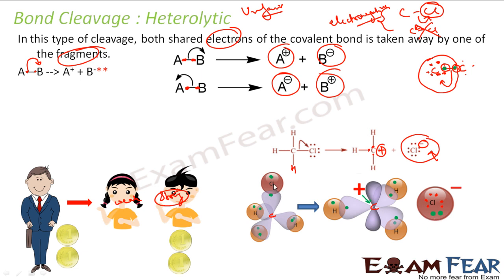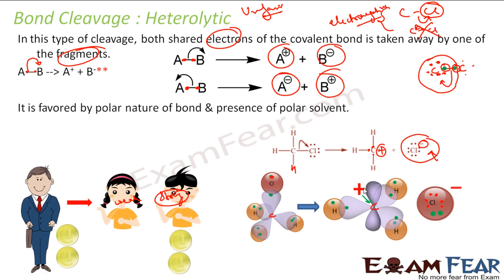So this is an example of heterolytic cleavage. This is favored by the polar nature of the bond — if one atom is more electronegative and the other less, there is a slightly polar nature in the bond — and also by the presence of a polar solvent. In polar conditions, one atom is more electron hungry, so we get heterolytic cleavage.